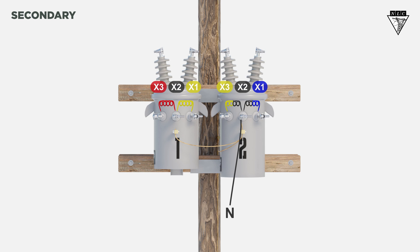Next, connect the X3 of the second transformer to the X1 of the first transformer. Run hot legs from the X3 and X1 of the second transformer.